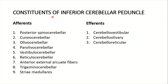The constituents of the inferior cerebellar peduncle include lots of afferents and a few efferents. Afferents are: posterior spinocerebellar, cuneocerebellar, olivocerebellar, parolivocerebellar, vestibulocerebellar, reticulocerebellar, anterior external arcuate fibers, trigeminocerebellar, and stria medullaris. The efferents of the inferior cerebellar peduncle are: cerebello-vestibular, cerebello-olivary, and cerebello-reticular.